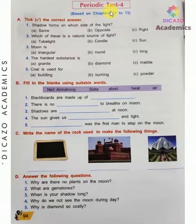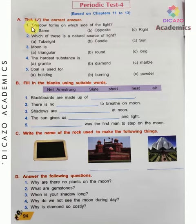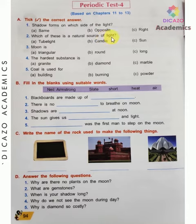Periodic Test 4 based on chapters 11 to 13. First, take the correct answer: shadows form on which side of the light? It is opposite. Which of these is a natural source of light? The answer is Sun. Moon is round.